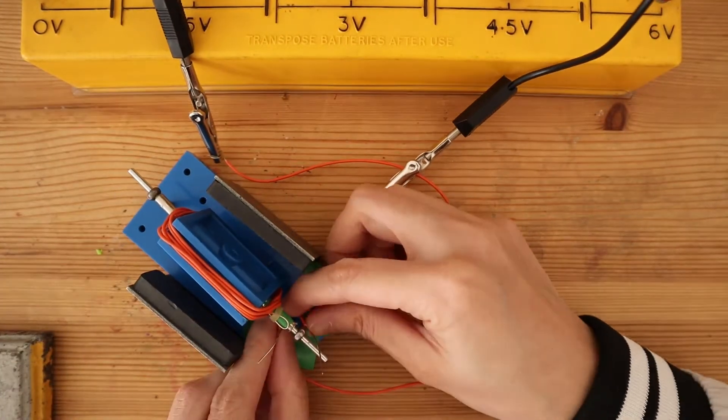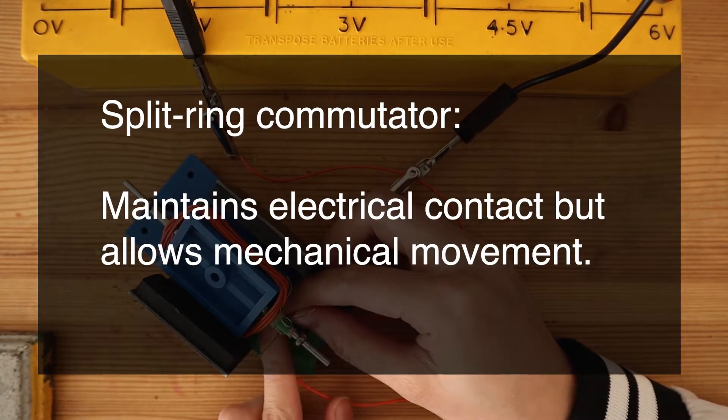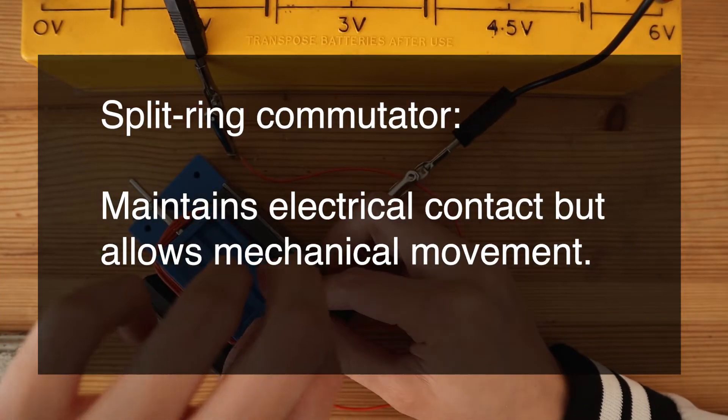I need to make sure the wires are just loosely touching the split ring commutator. This is so that electrical contact is maintained while allowing mechanical movement.